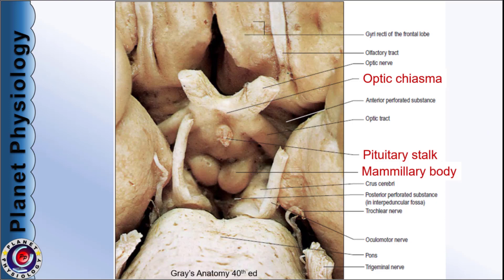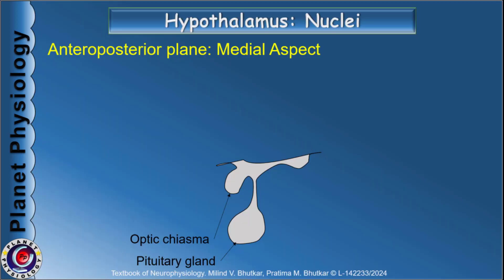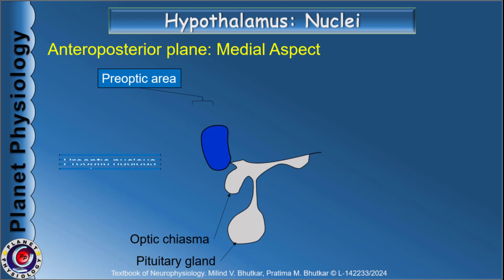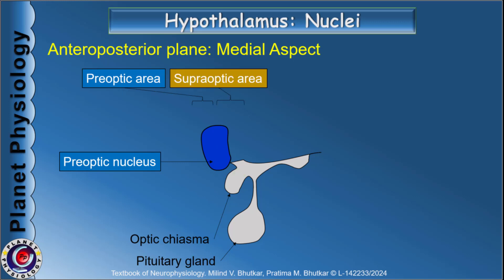Here is a diagrammatic representation of the antero-posterior view of the brain viewed from the medial aspect. Anteriorly we have the optic chiasma, next to it is the pituitary gland, and posteriorly this elevation represents the mammillary body. For the sake of understanding, various hypothalamic nuclei are divided into four areas or groups. The anterior-most area is the preoptic area and it includes only one nucleus, i.e., the preoptic nucleus, which lies anterior to the optic chiasma.